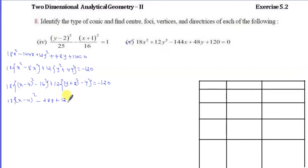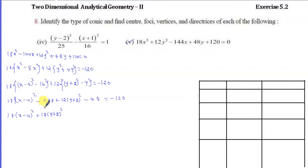So we have 18 into (x minus 4) whole square plus 12 into (y plus 2) whole square. On the right side, we have minus 288 minus 48 and minus 120, which gives us plus 288 plus 48 minus 120, and that equals 216.